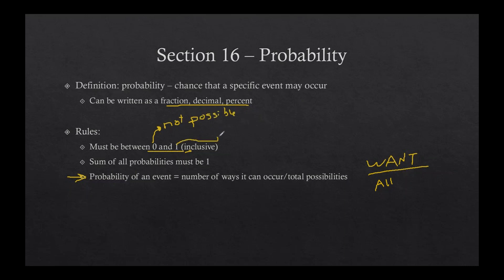So what does a probability equal to one mean? The probability of you having homework over this section is one, because a probability of one means 100%, and that means it's definitely going to happen. It's not only that it's possible — it's definitely going to happen. So the closer your probability is to one, the more likely it is to happen.